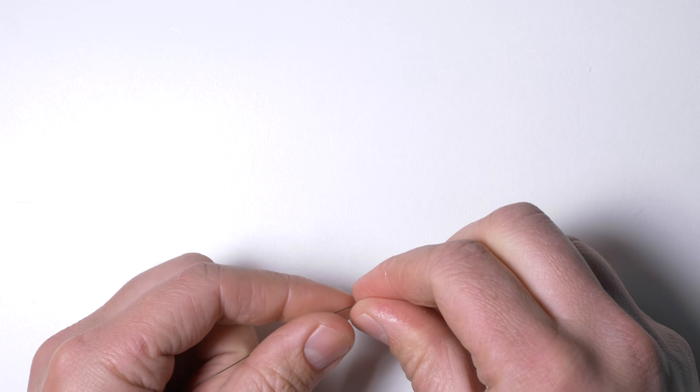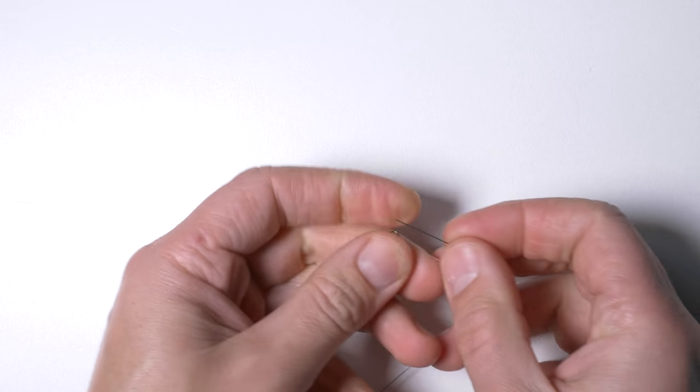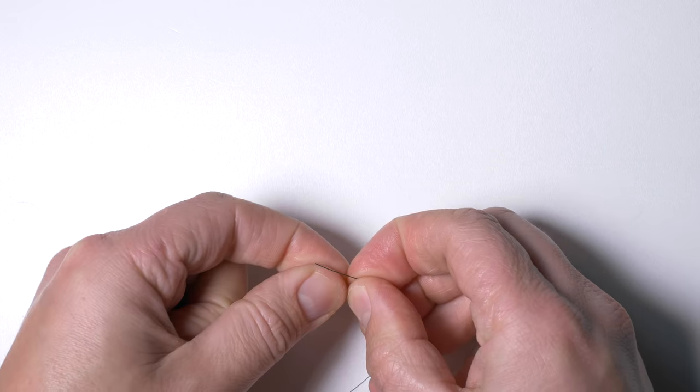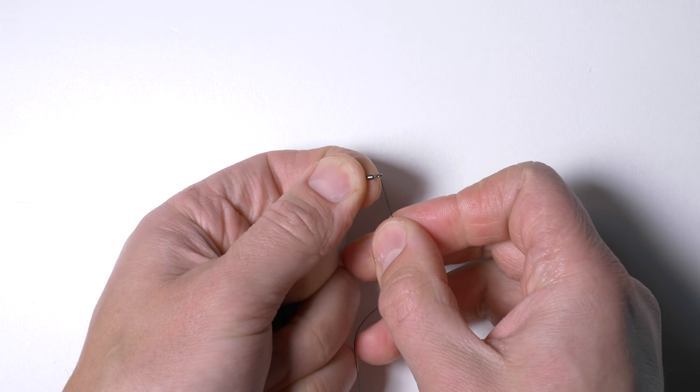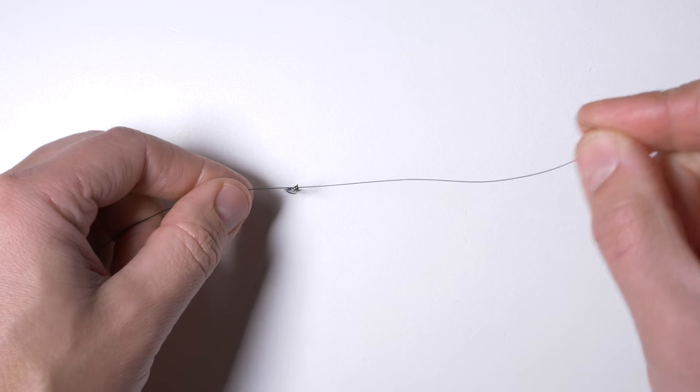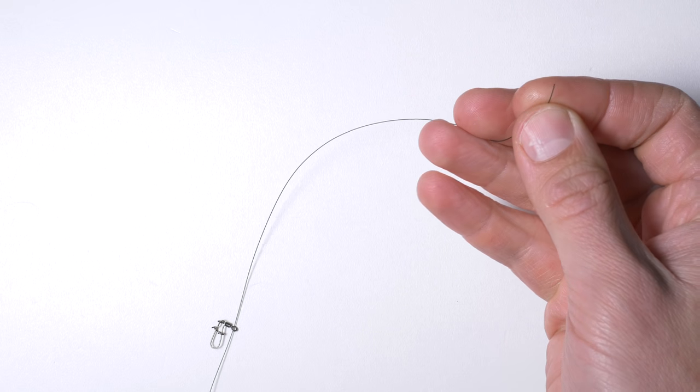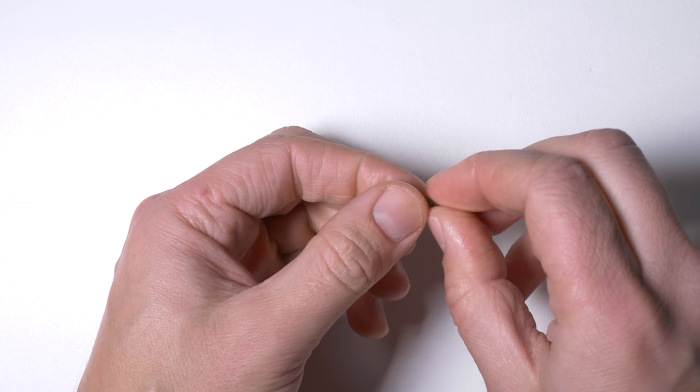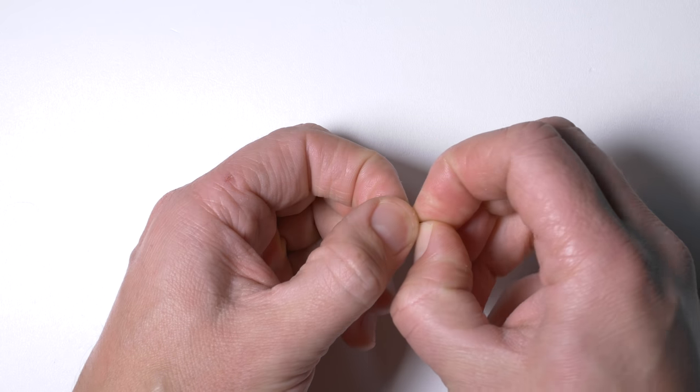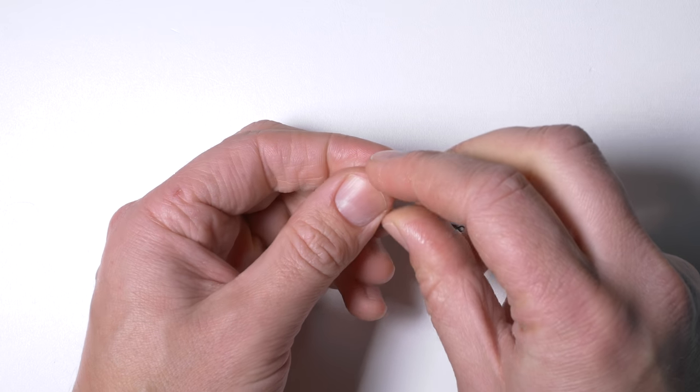Then I will thread the swivel and clip onto the line. Then I will thread the rubber bead onto the line starting from the narrower end.